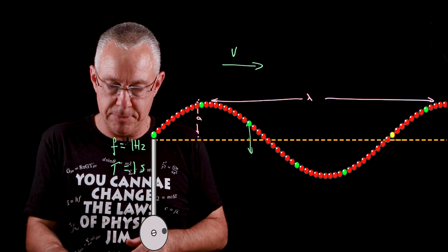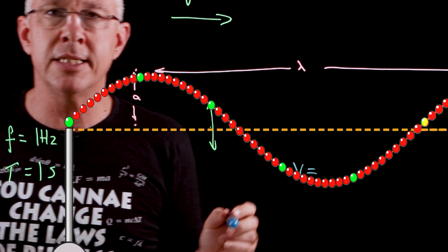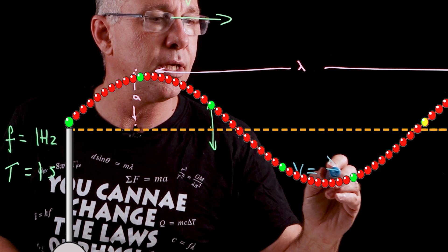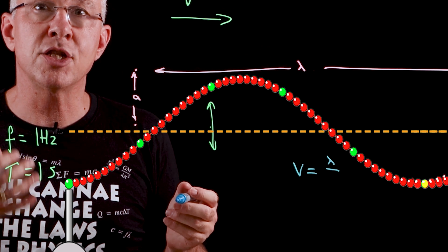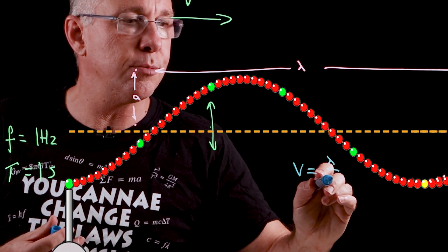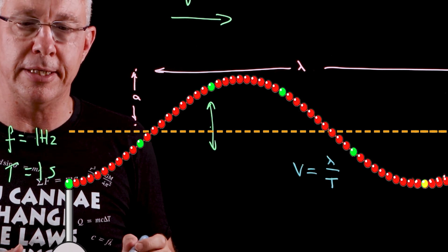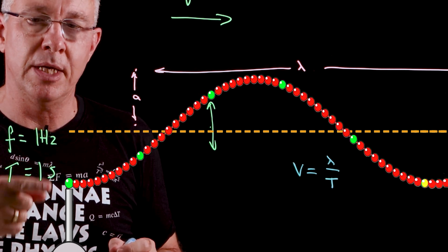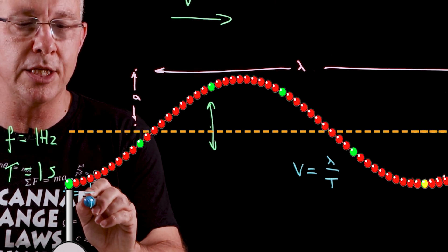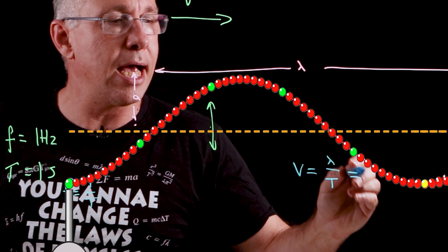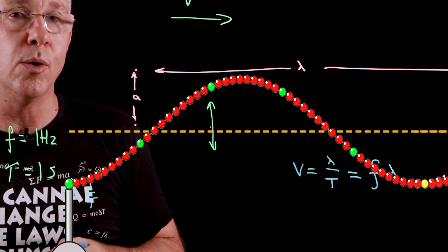Speed is distance over time. If we choose our wavelength as the distance, you'll notice that the time for one wavelength to pass is the period. So the speed equals lambda over the period. There is an inverse mathematical relationship between frequency and period — if you increase frequency, the period decreases. So we can rewrite this as v equals f times lambda, and we have what we call the wave equation.